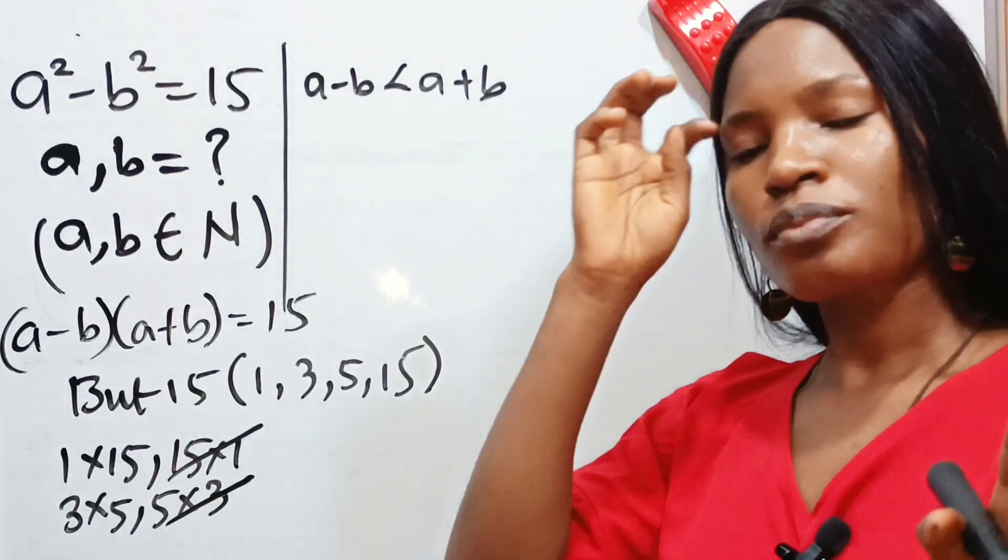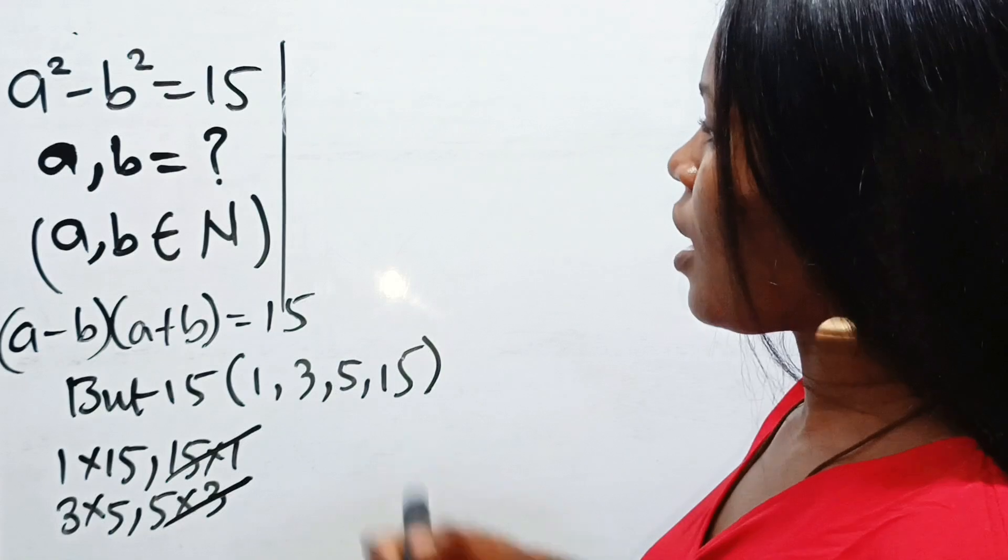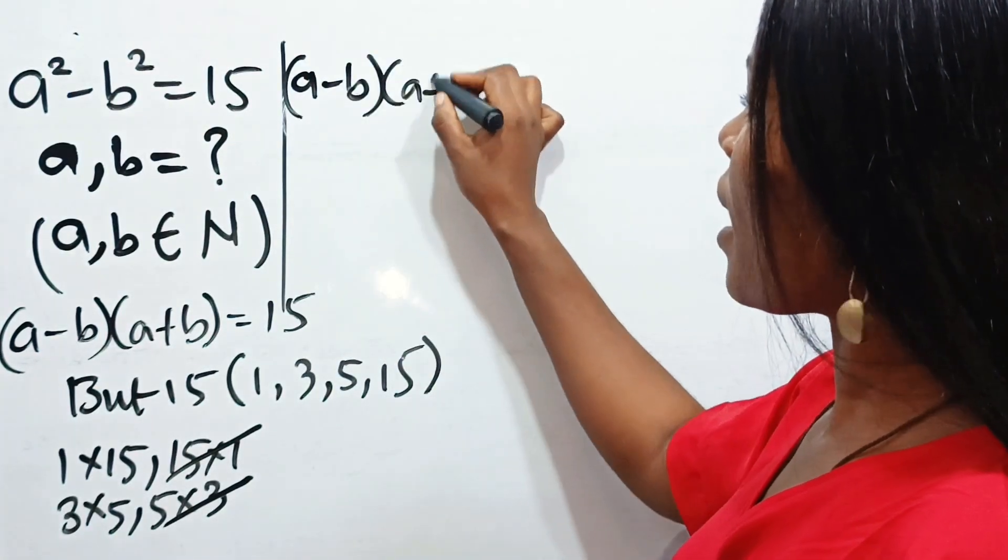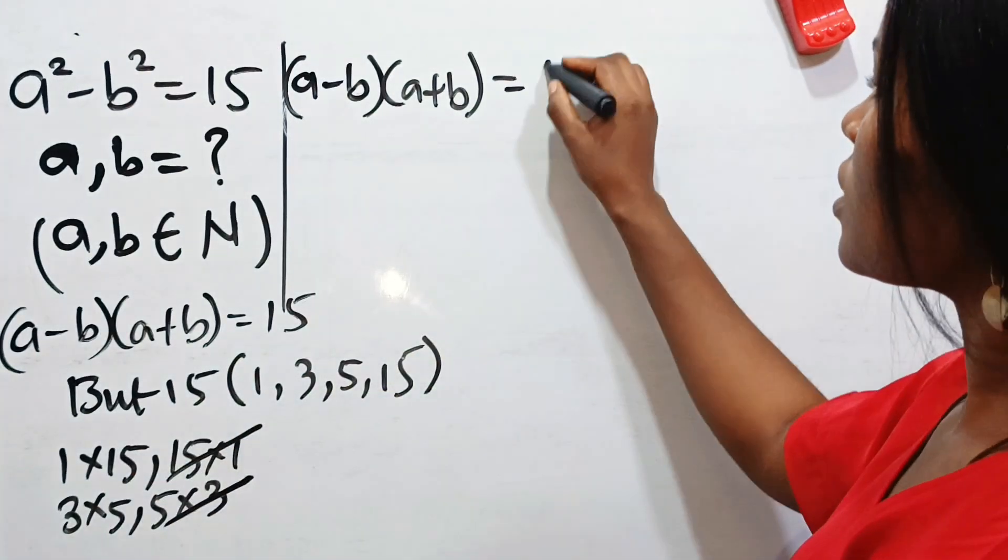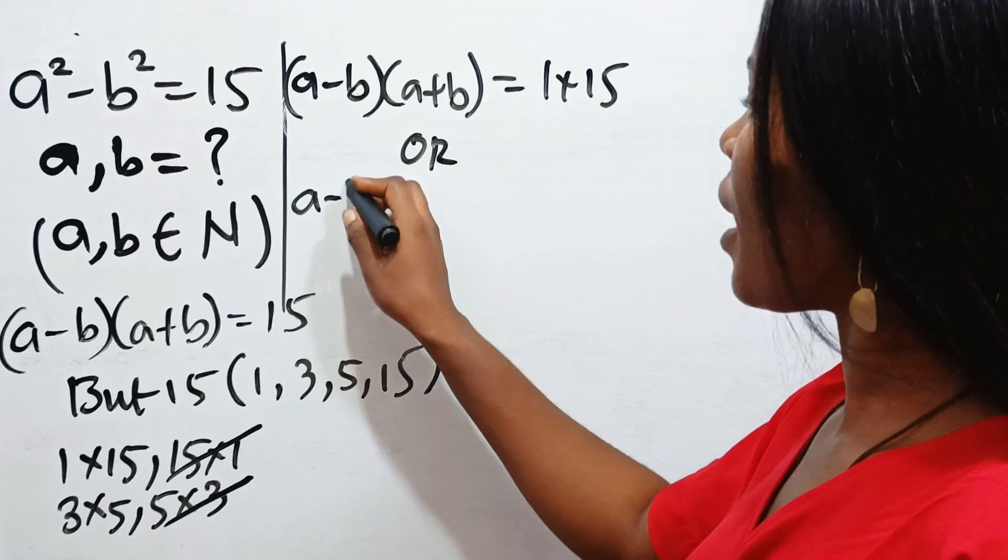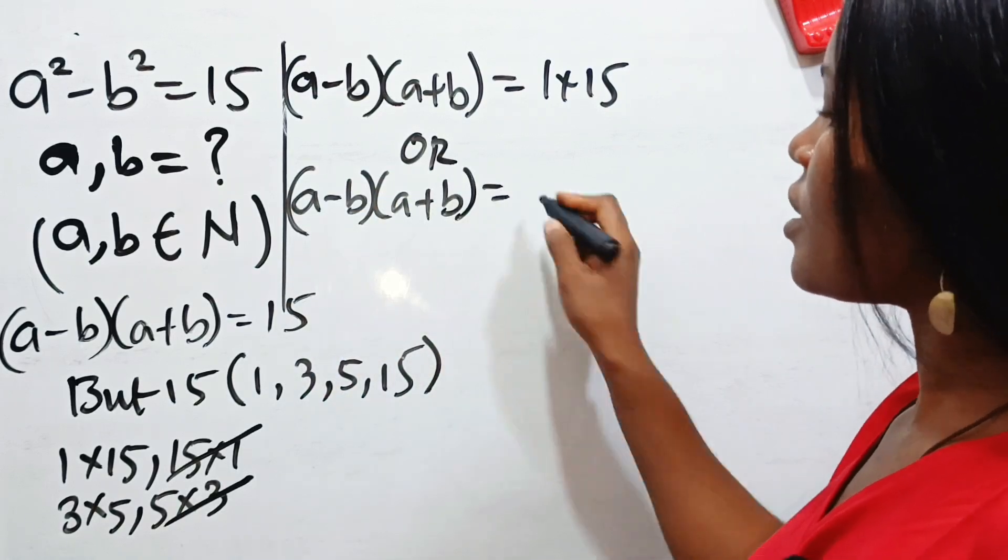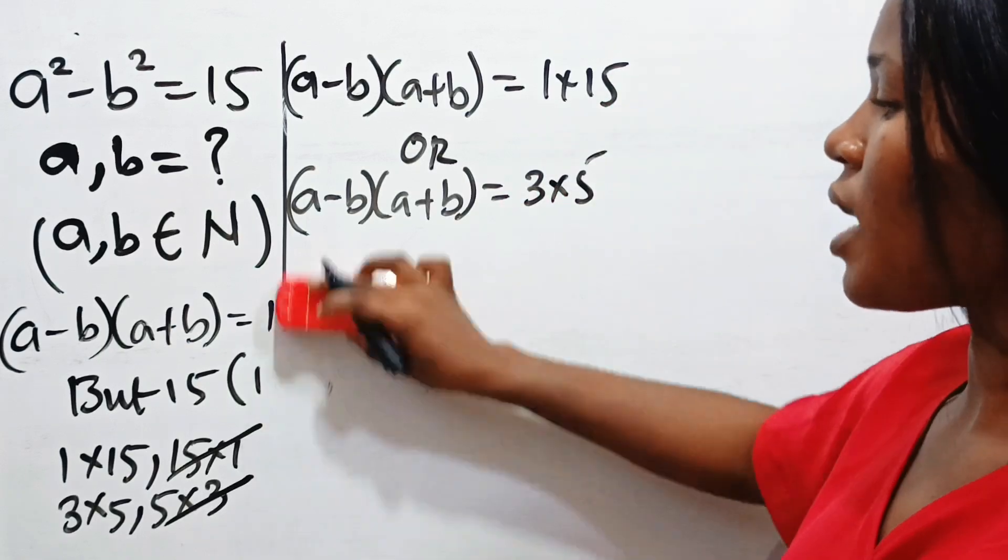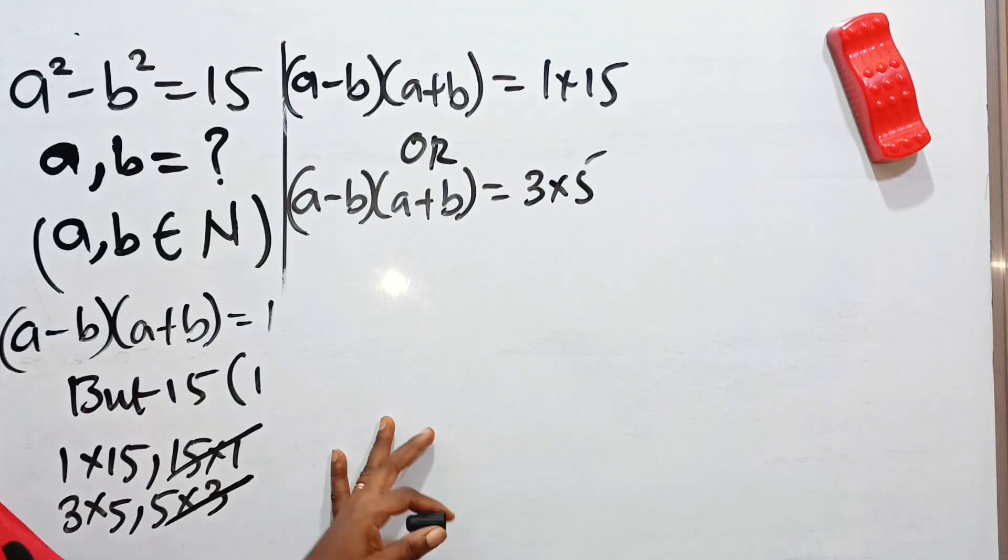Therefore, we just have two opportunities or two possibilities here, which are that a minus b multiplied by a plus b is equal to, let's pick 1 multiplied by 15, or a minus b multiplied by a plus b is equal to 3 times 5. These are the options that we have now. Permit me to turn to this side.